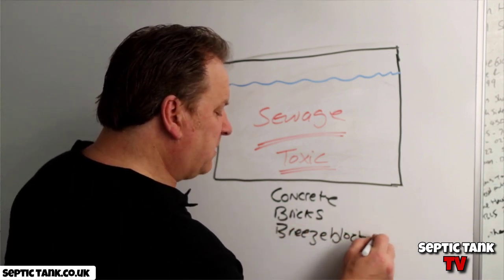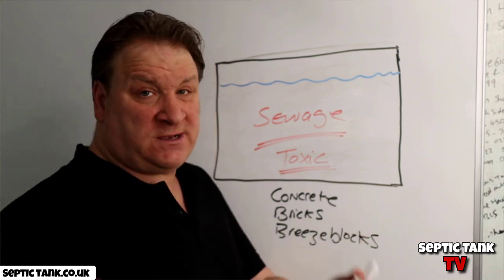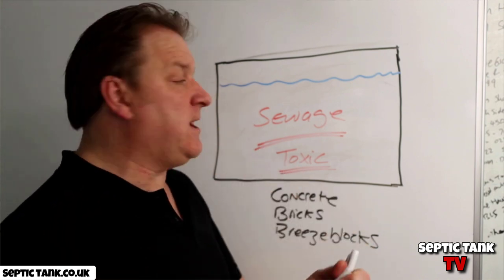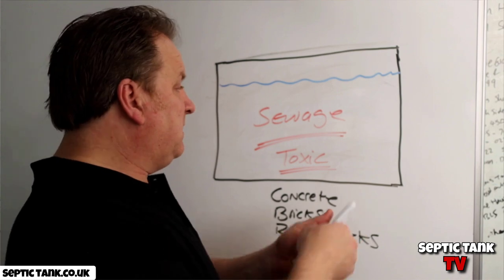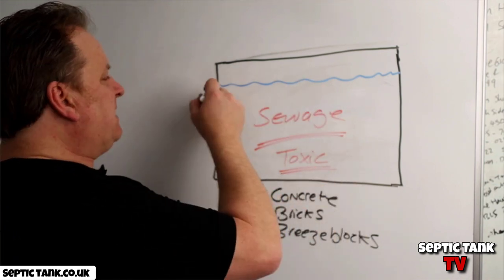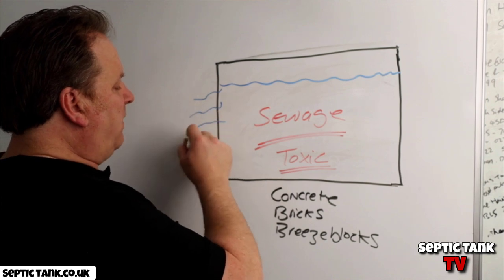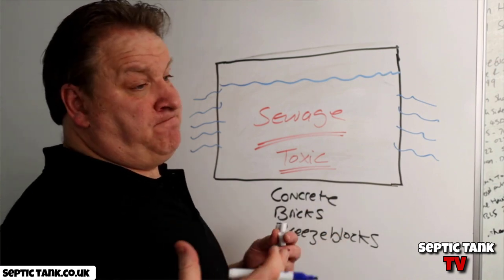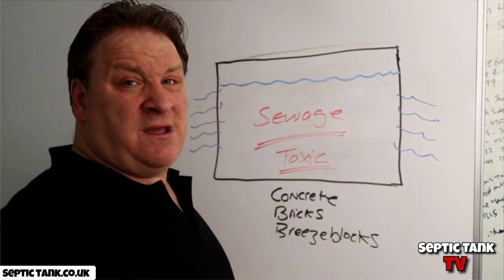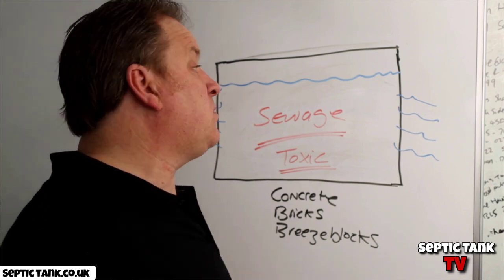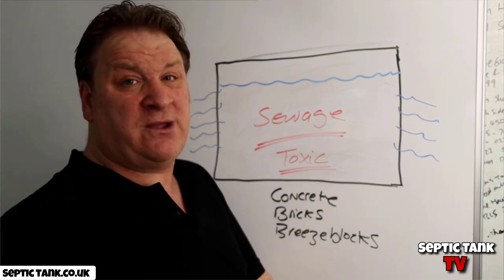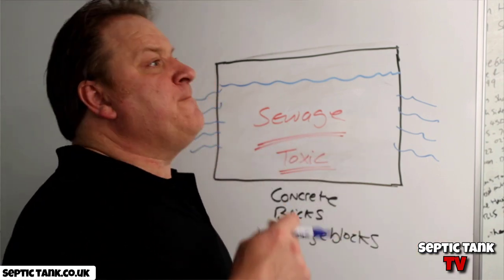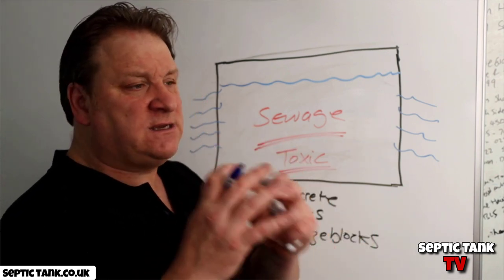Over time, concrete, bricks, mortar, and breeze blocks crumble, break down, and disintegrate. What happens then is that wastewater from the septic tank makes its way out through the walls into the soil. People may say that's fine — it's similar to a soakaway where wastewater soaks away into the ground. Well, that's partly right.